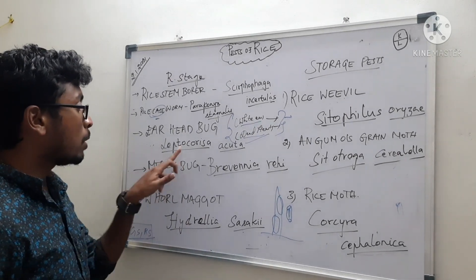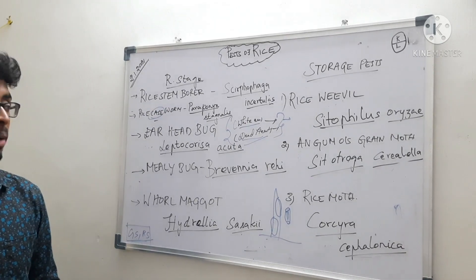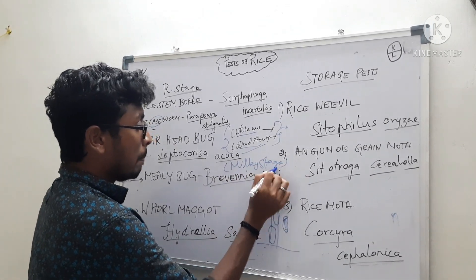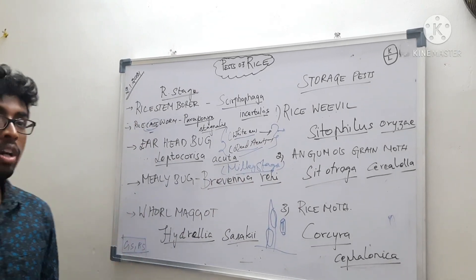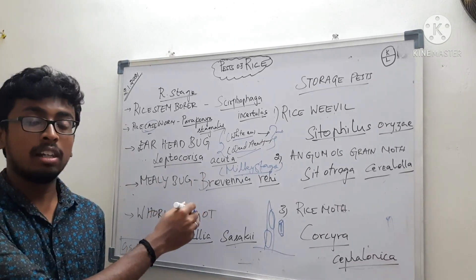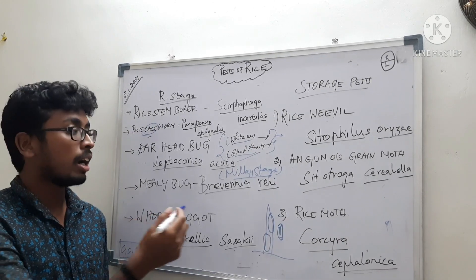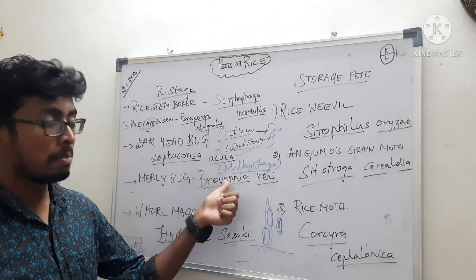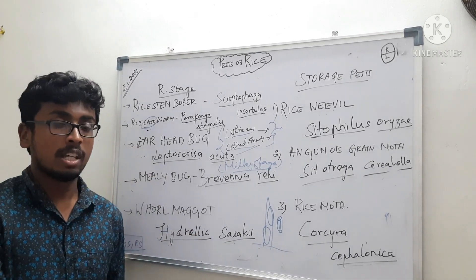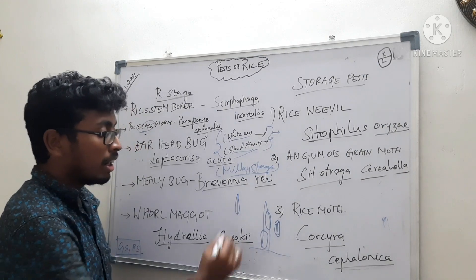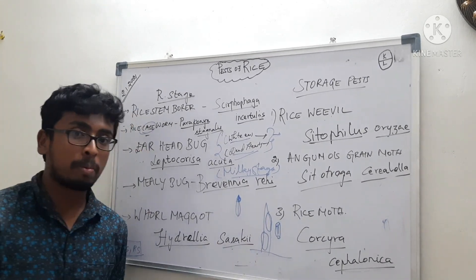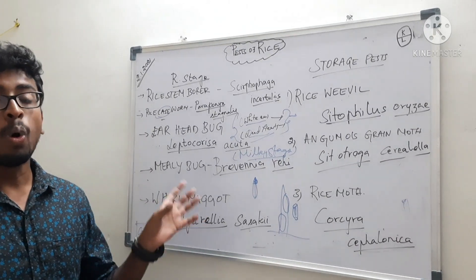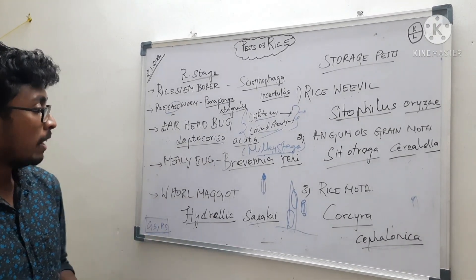Next is the rice ear head bug, Leptocorisa acuta. This is a major pest occurring mainly during the milky stage of the crop. During the milky stage, the pest sits on the panicle and feeds on the content of the rice grains — the milky filled grains. It causes feeding punctures, and a brownish pot-like structure will be visible on the rice grain. Also, a characteristic stinky bad odor is produced in case of rice ear head bug infestation.